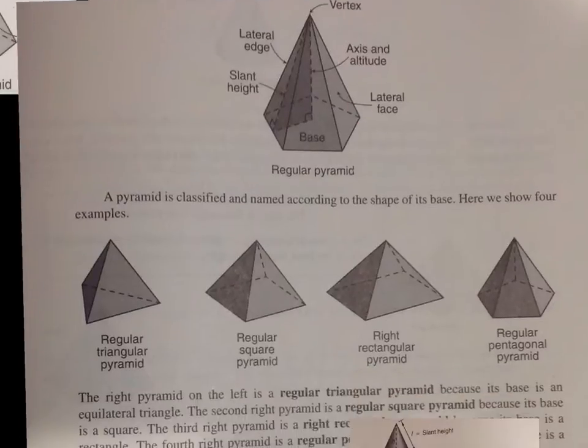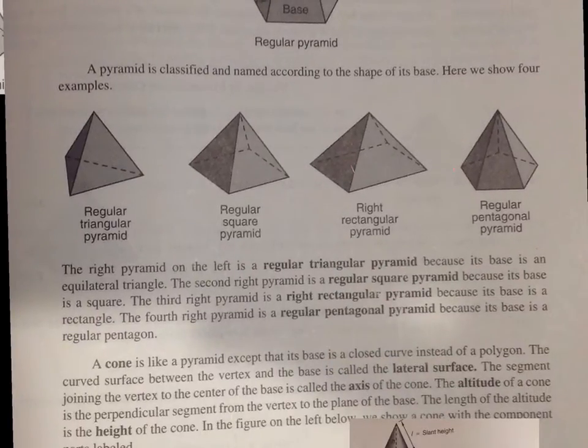And notice over here we have a triangular pyramid, a square pyramid because it's got a square. This one has a rectangle. The sides are not all the same. And it's called a rectangular, and this one is called a pentagonal.